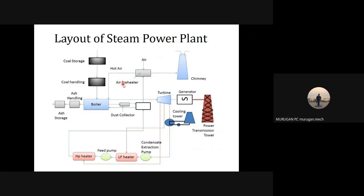The air and flue gas circuit provides air for combustion. This circuit consists of an air filter, air preheater, dust collector, and chimney. The air is drawn from the atmosphere and sent via the air preheater. The dust from the air is removed by means of the filter arranged in the circuit. The waste flue gas is then passed to the chimney.